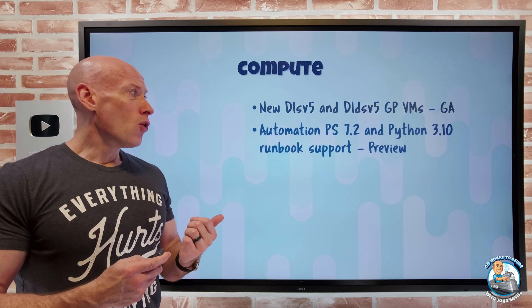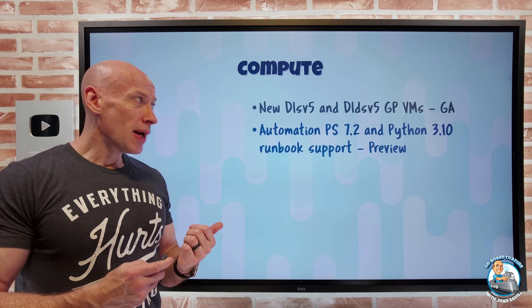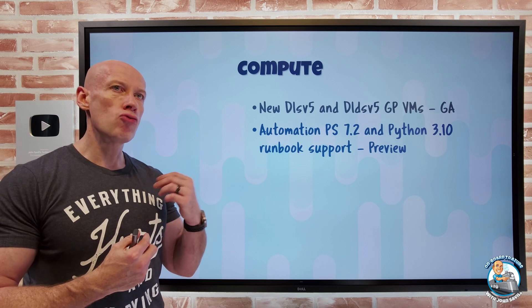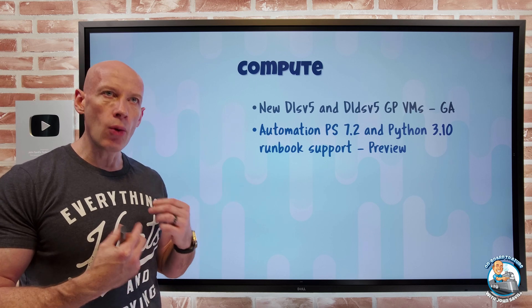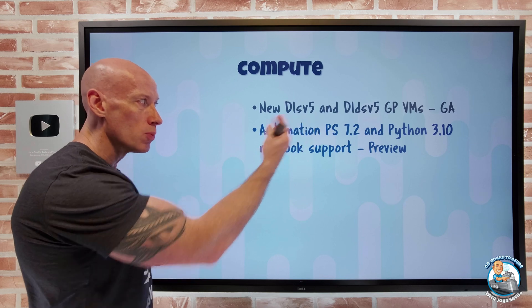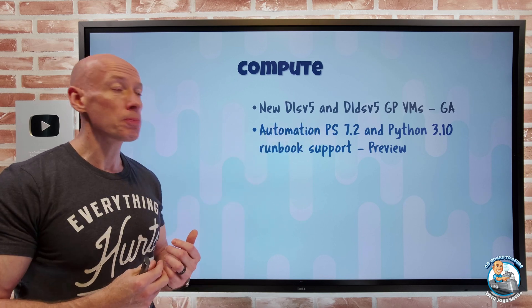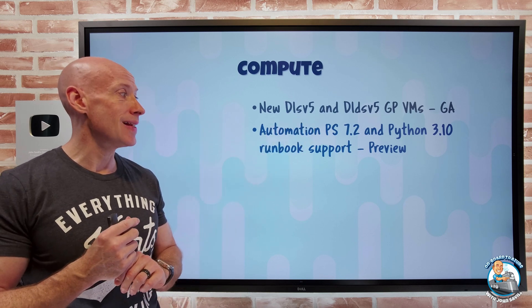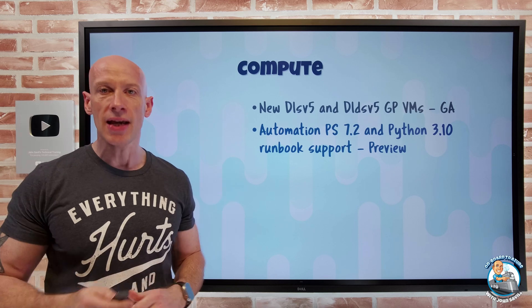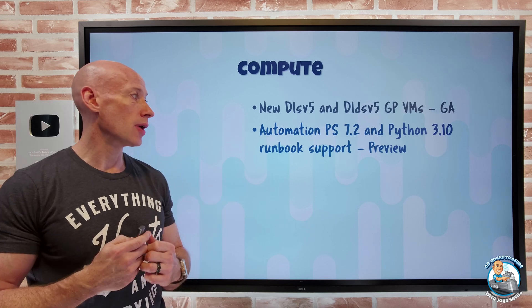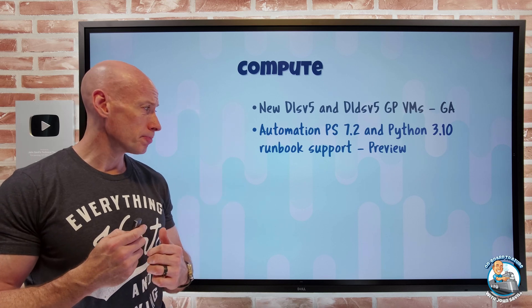For Azure Automation, when I create a new runbook, I now have the option of using PowerShell 7.2 or Python 3.10 in preview, so I can take advantage of those new versions.